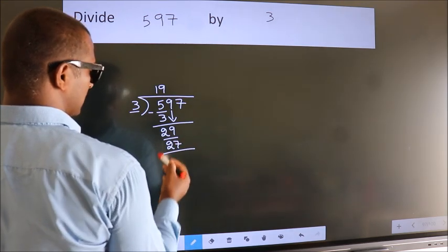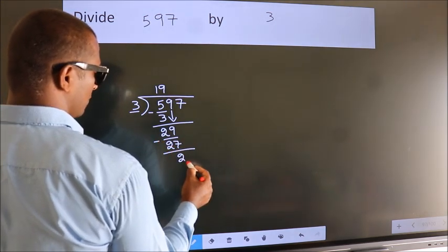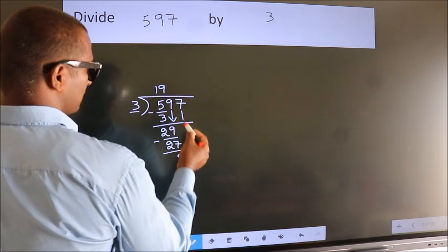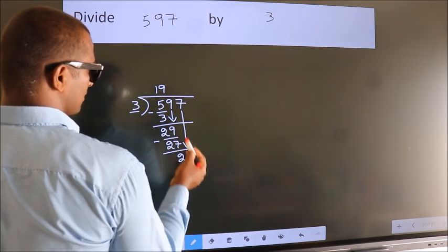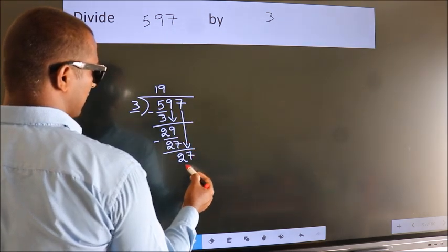Now, we subtract. We get 2. After this, bring down the beside number. So, 7 down. So, 27.